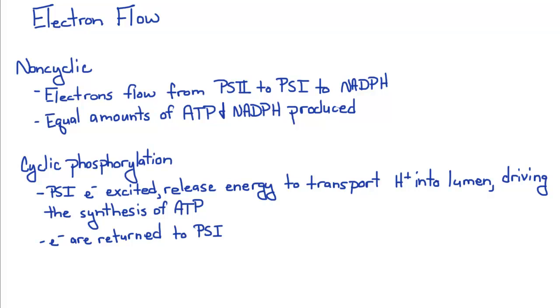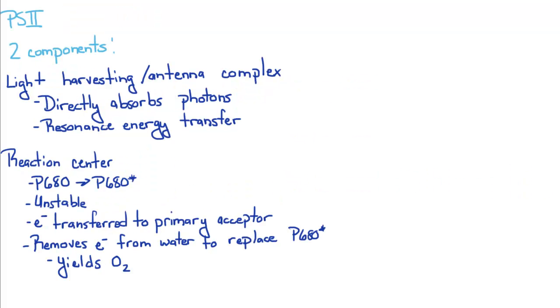This normally happens when the cell is low on ATP. So the first complex involved in photosynthesis, the light-dependent reactions, you've got your photosystem II. You've got two components.